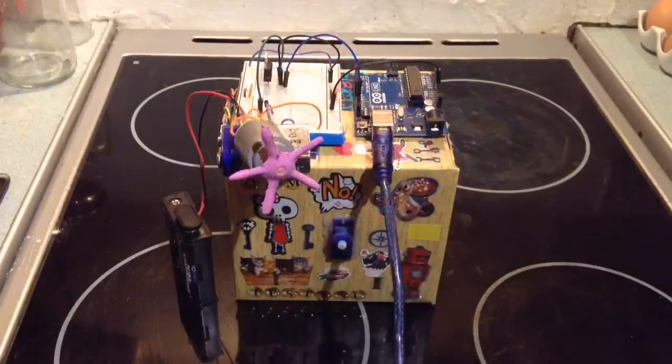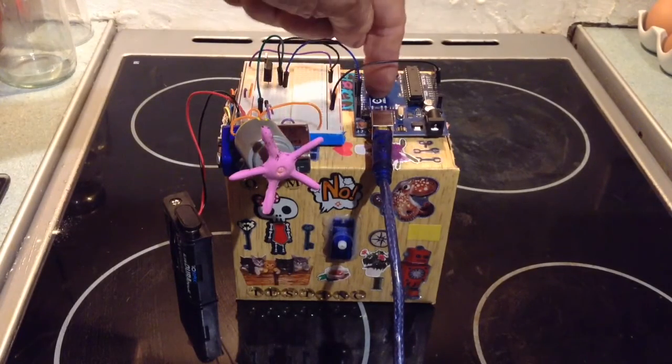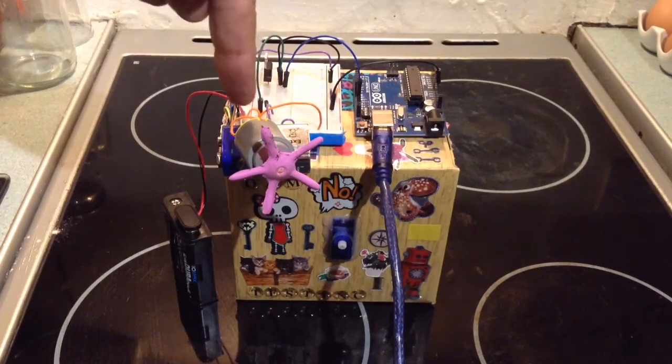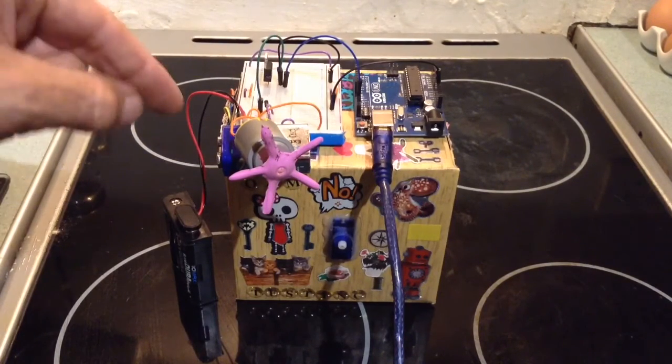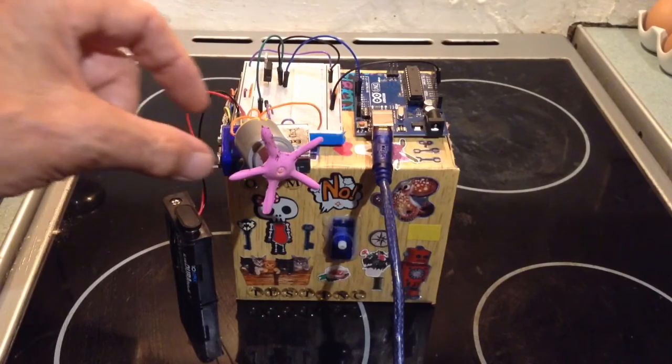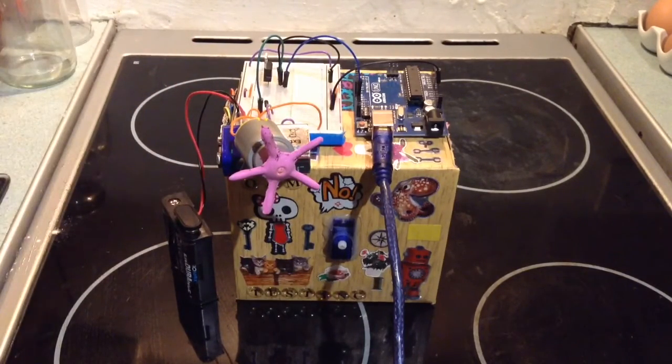Second part of tonight's experiment: it's now running the blink program, which turns this on and off—on for one second and off for one second. I've changed the voltage on the motor from 9 volts to 4.5 volts. Let's give it a go.